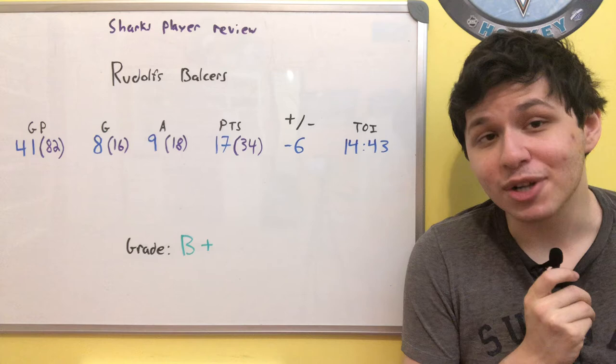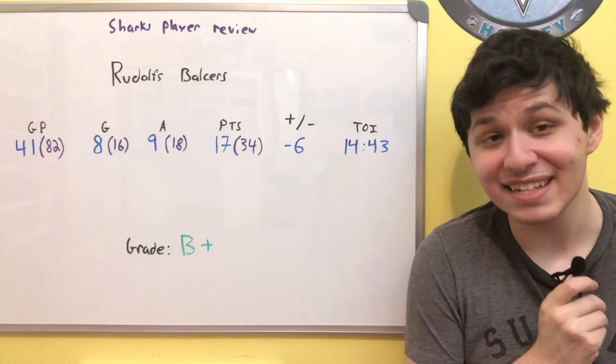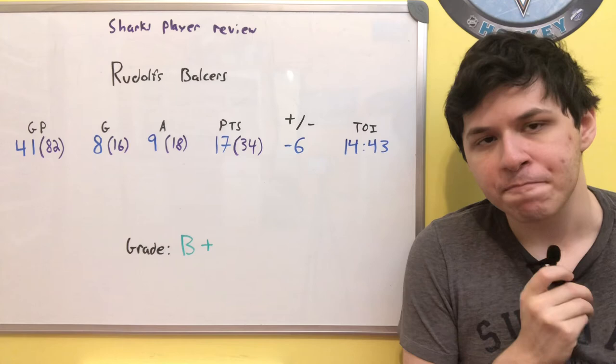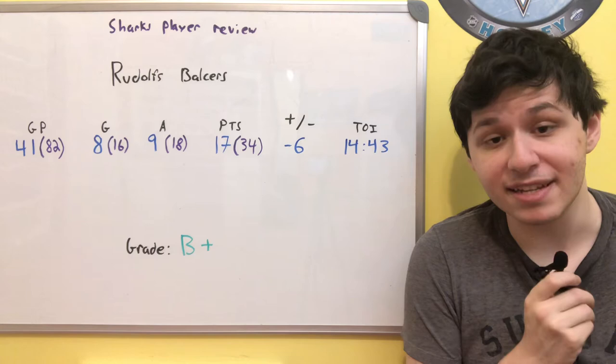So, 82 games played, 8 goals on the year, which would have put him at 16 for a full season, 9 assists, which would have put him at 18 assists for a full season, and 17 points, which would have put him at 34 points for a full season. Those are about in line with what you would expect from a solid third-line player. And that's exactly what Balcers should end up being, at least going into the following season.